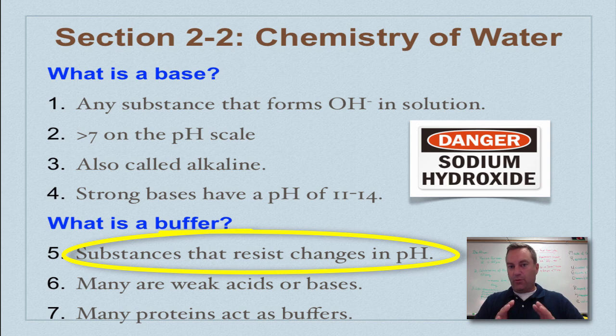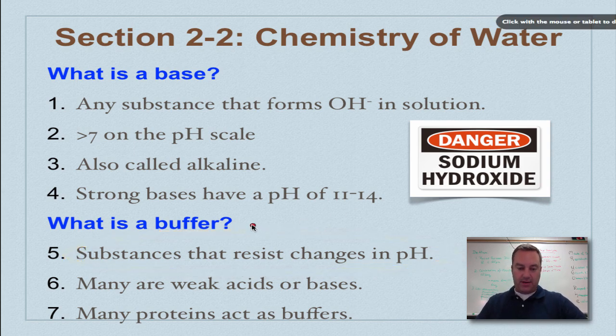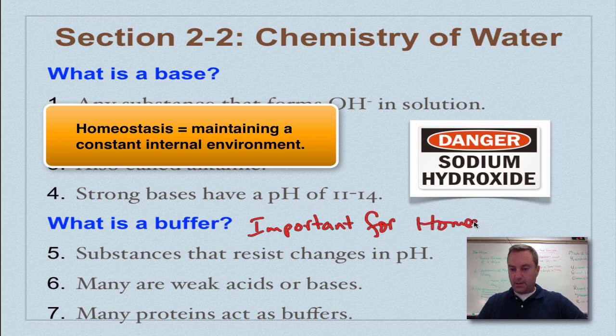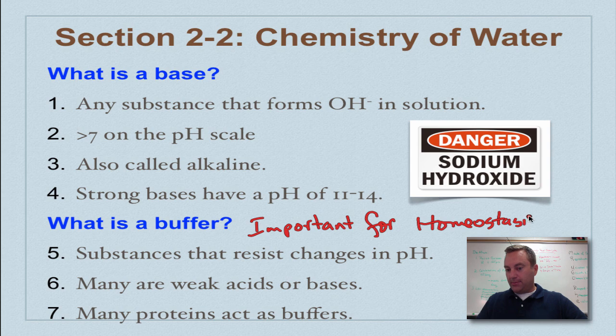Now, a buffer is a substance that resists changes in pH. And these guys are really, really important for a process called homeostasis. Because you're going to learn later in this chapter, in chapter two, that you've got to keep the chemistry inside your body constant because any disruptions can lead to some problems. And pH is really important. We need to keep the pH range in your body very, very narrow because it's very important for proteins to do their job. And what happens is proteins often act as a buffer.